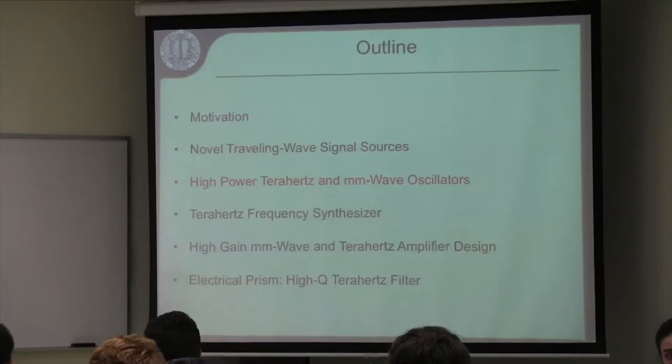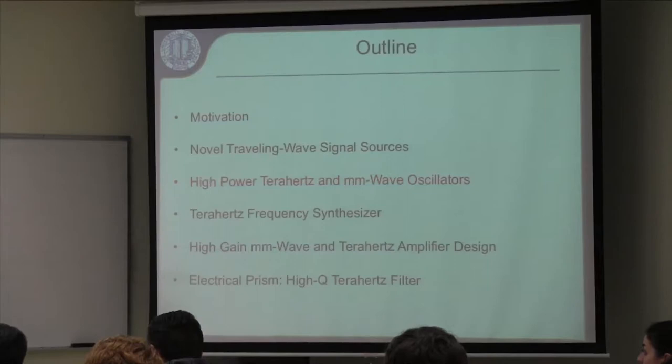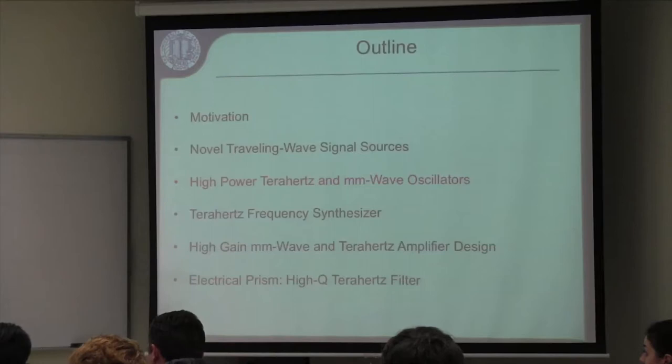Q: What was the original input frequency? A: It's a doubler — if the output is at 220 GHz, the input is around 110 GHz. In that structure you can also get even harmonic multiplication, such as multiply by 4, but as the harmonic number goes up the output power goes down.